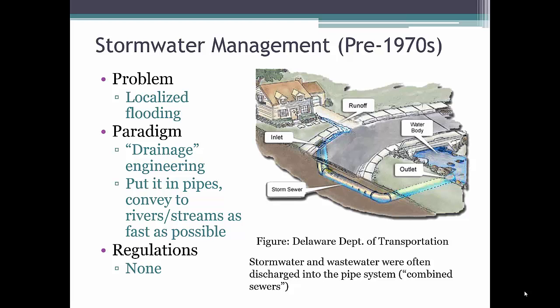Prior to the 1970s, stormwater management was focused on reducing localized flooding. The preferred solution at this time was to put stormwater runoff into underground pipes and convey it to the nearest river, lake, or stream as fast as possible. There were generally no regulations to meet, and drainage engineers who calculated the correct sizing of inlets and pipes were the only people responsible for stormwater management.